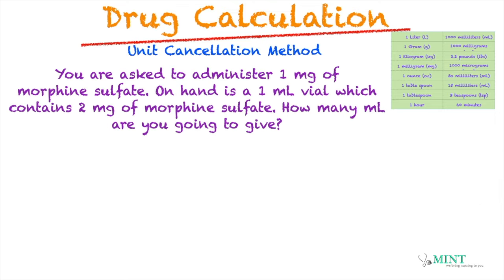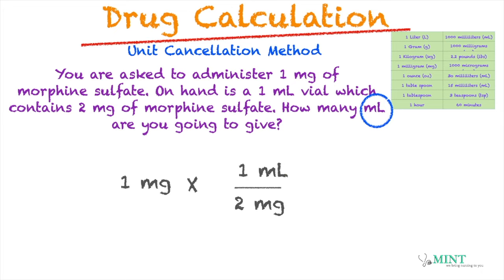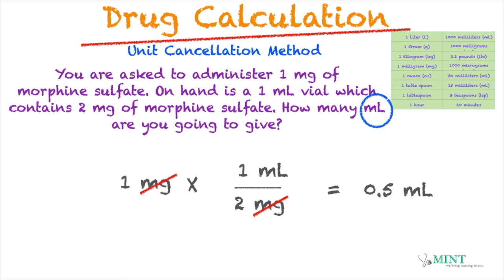You are asked to administer 1 milligram of morphine sulfate. On hand is a 1 ml vial which contains 2 milligrams of morphine sulfate. How many ml are you going to give? The problem is looking for ml. The order is 1 milligram times — for every ml it contains 2 milligrams of morphine — written as 2 milligrams equals 1 ml. We cancel milligrams, leaving ml. The math: 1 times 1 divided by 2 gives us 0.5 ml.